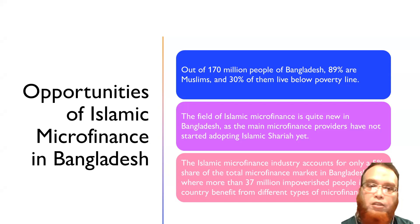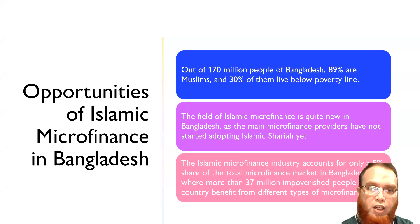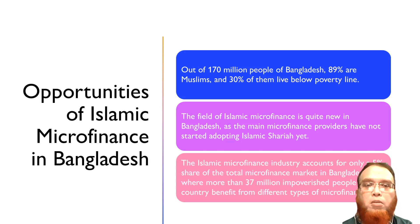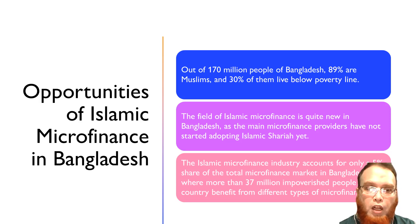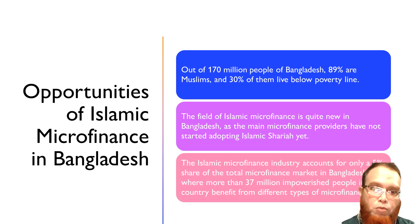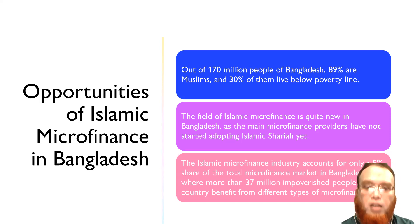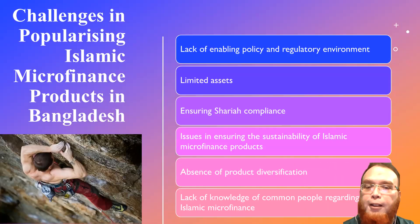The Islamic microfinance field is not very old in Bangladesh, and the main microfinance providers like Grameen Bank and BRAC are only concerned with the conventional system. The Islamic microfinance industry accounts for only five percent of the total microfinance market. More than 37 million people use conventional microfinance products, but only five percent are using Islamic microfinance products — a statistic that needs to improve.